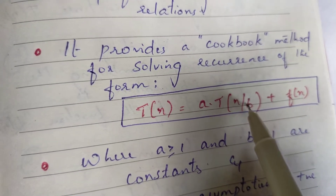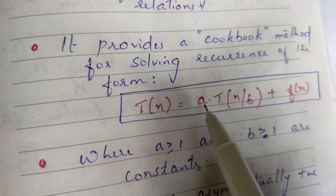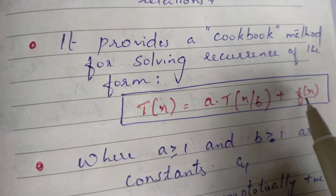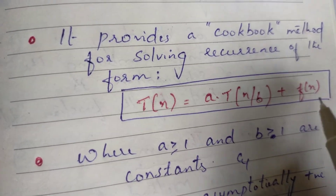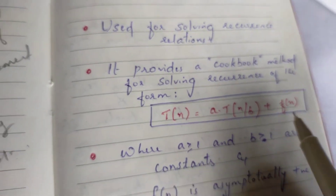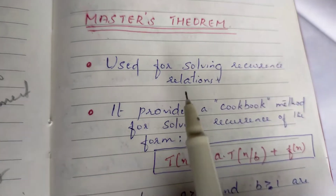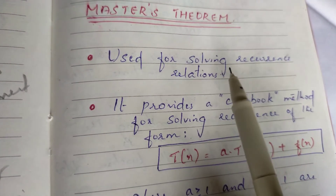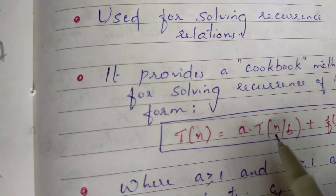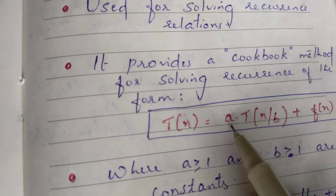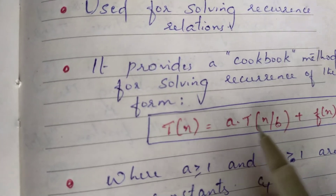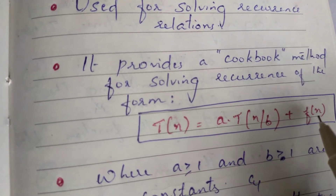Here, a and b are constants. The value of a should be greater than or equal to 1, and b should be greater than 1. f(n) is an asymptotically positive function. Master's Theorem provides a Cookbook Method for solving recurrences of the form T(n) = a * T(n/b) + f(n), where a and b are constants with a ≥ 1, b > 1, and f(n) is a positive function.